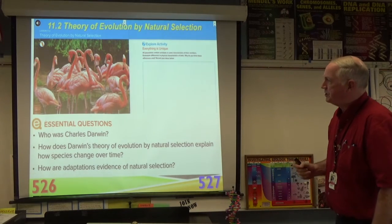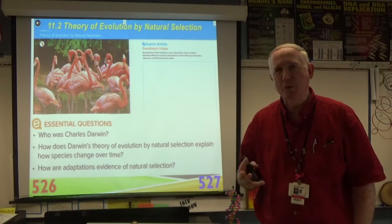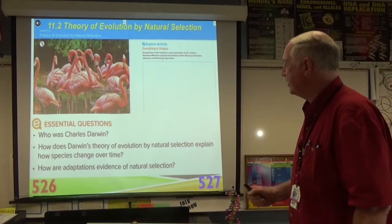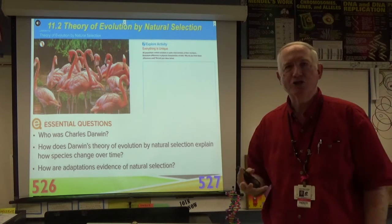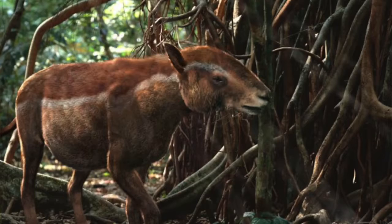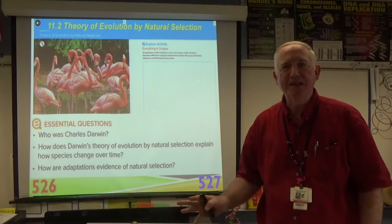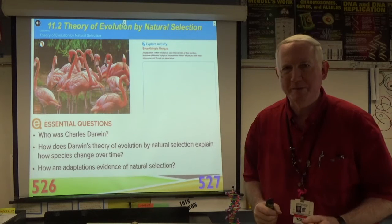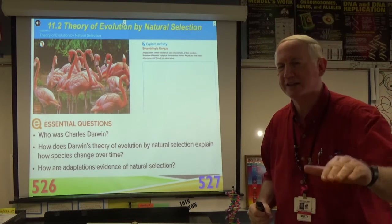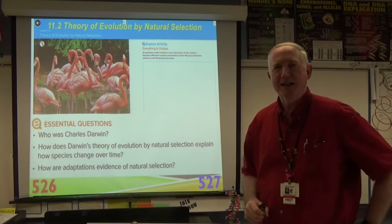Our essential questions are: who is Charles Darwin? — hopefully that's a name that's familiar. How does Darwin's theory of evolution by natural selection explain how species change over time? Like we saw the Propaleotherium, the little horse, or the Ambulocetus, the walking whale, eventually become the Basilosaurus, the giant whale. How are adaptations evidence of natural selection?